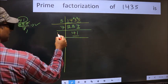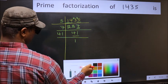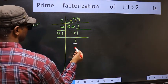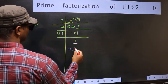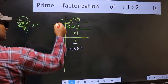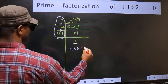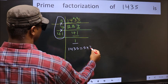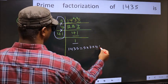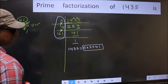41 is a prime number, so 41×1=41. We got 1 here. So the prime factorization of 1435 is the product of these numbers: that is 5 into 7 into 41. This is the prime factorization of 1435.